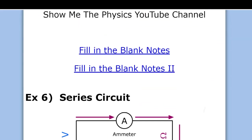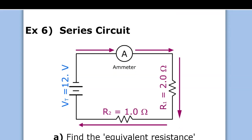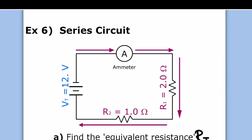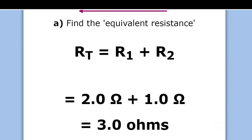Now let's look at a series circuit — one path for current, no branching. Find the equivalent resistance, meaning the total resistance. For a series circuit it's super easy: you just add the resistors. Two plus one equals three ohms — that's the equivalent total resistance.